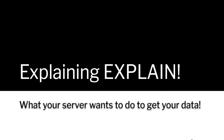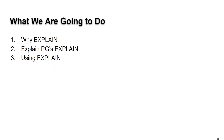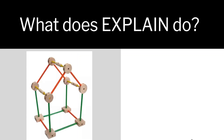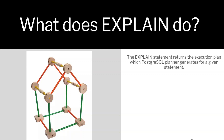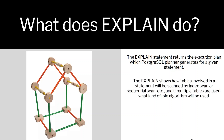This episode is on Explaining Explain — or what your server wants to do to get you your data. We're going to look at why Explain exists, explore Postgres's Explain, and use Explain. The Explain statement returns the execution plan, which is what Postgres's planner generates for a given statement. You send it a query, and it returns what it wants to do to get your data — which tables are involved, how they're brought into the mix, how they're used, and what sort of algorithms are applied.